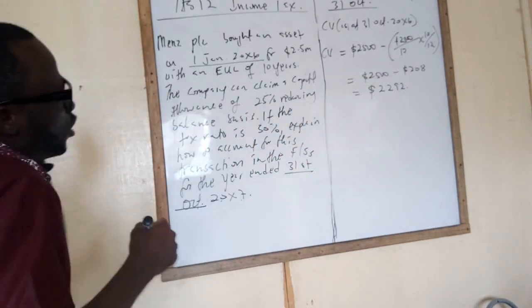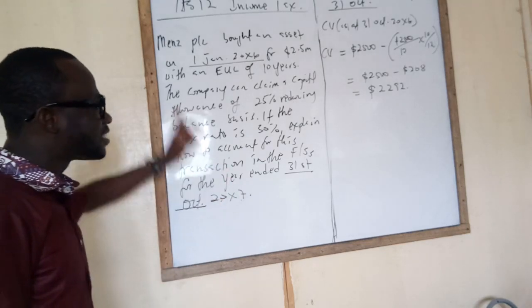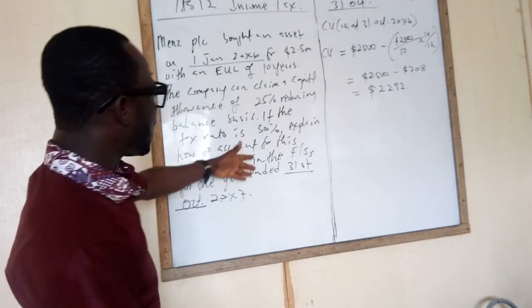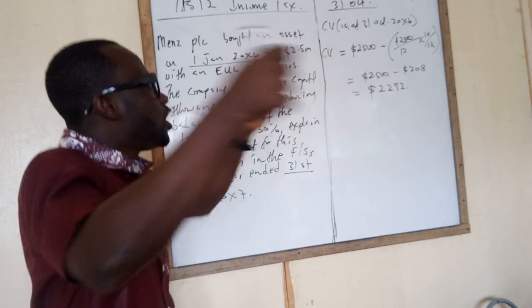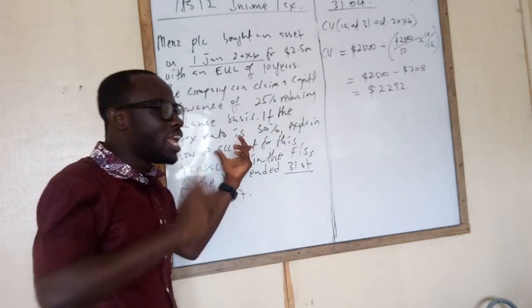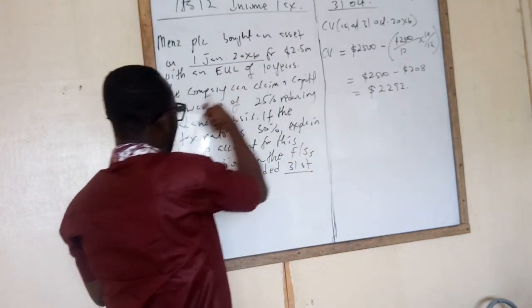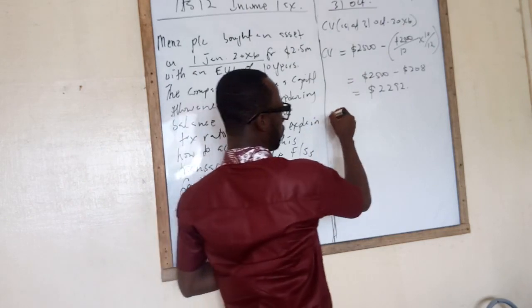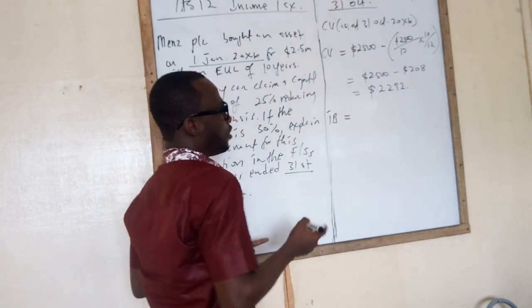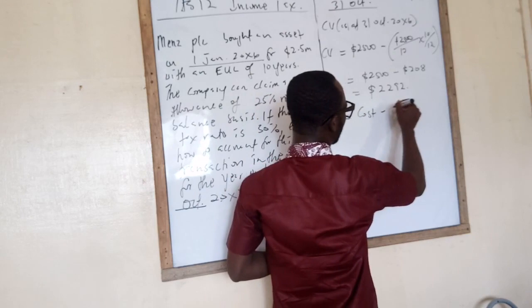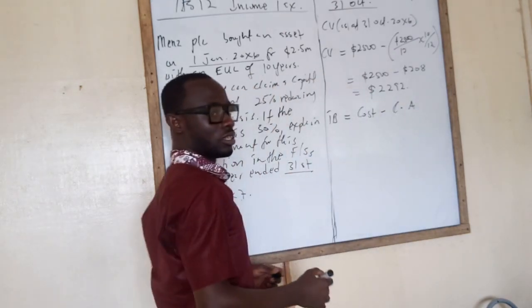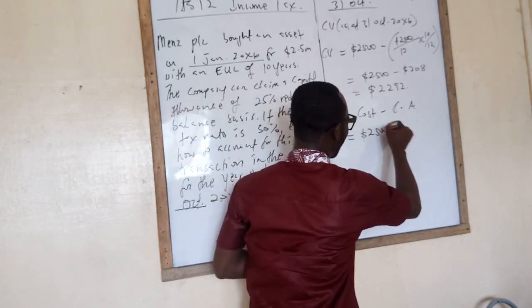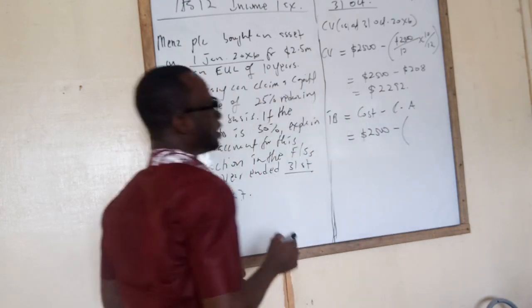But remember, in this question, even though he didn't tell us to account for it as per IAS-12, he just said we should account for this transaction. The reason we know it is an income tax question is because of that capital allowance mentioned inside. Now that we have the carrying value of the asset, we need to also find out the tax base of the asset. The tax base of the asset should be the cost minus the capital allowance.